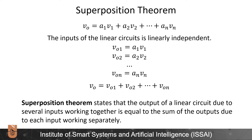The superposition theorem states that the output of a linear circuit due to several inputs working together is equal to the sum of the outputs due to each input working separately. So if I have input V1 and output Voutput1, and input V2 and output Voutput2, the output of the whole circuit is the sum of the outputs from those individual voltage or current sources.